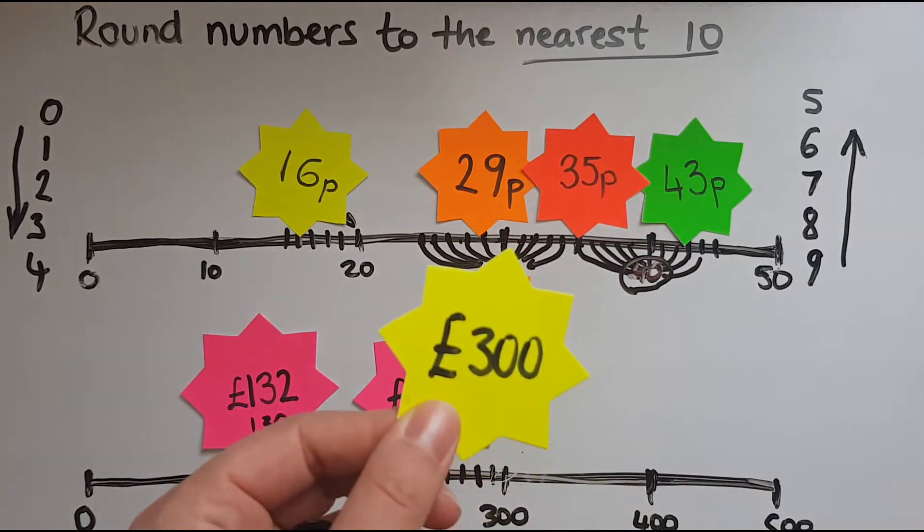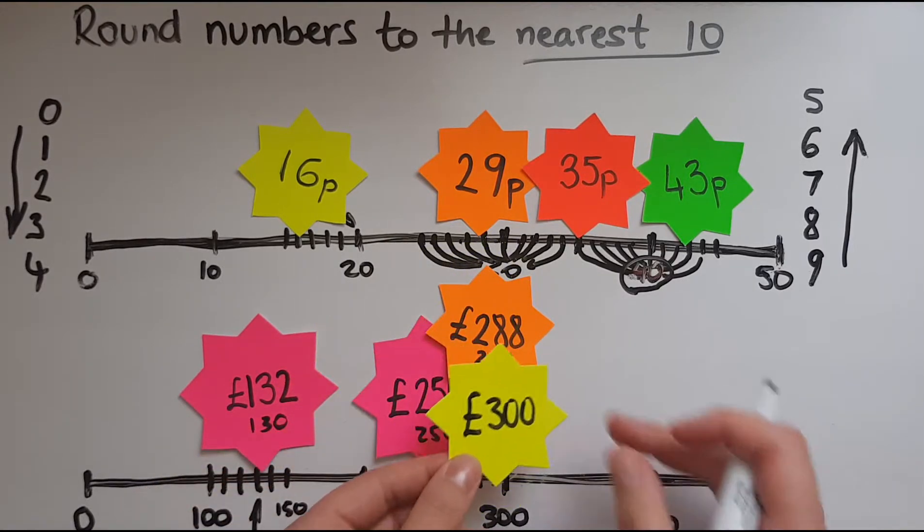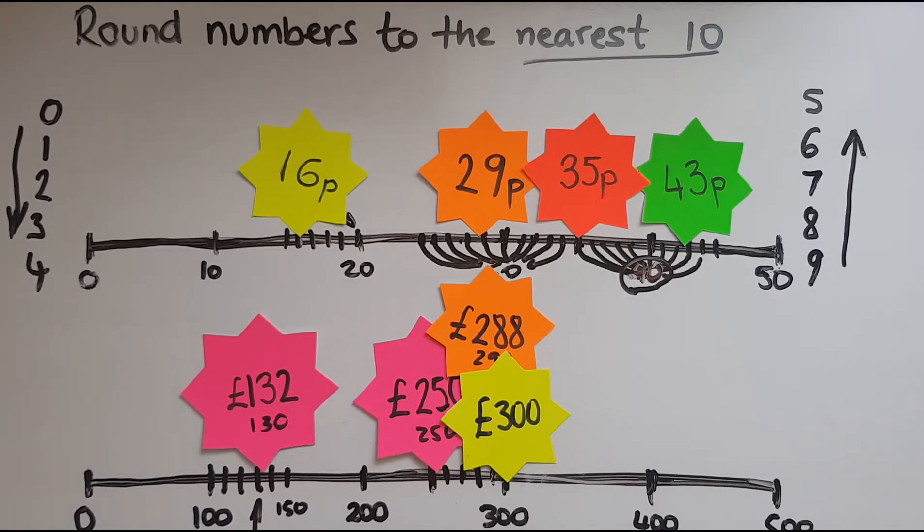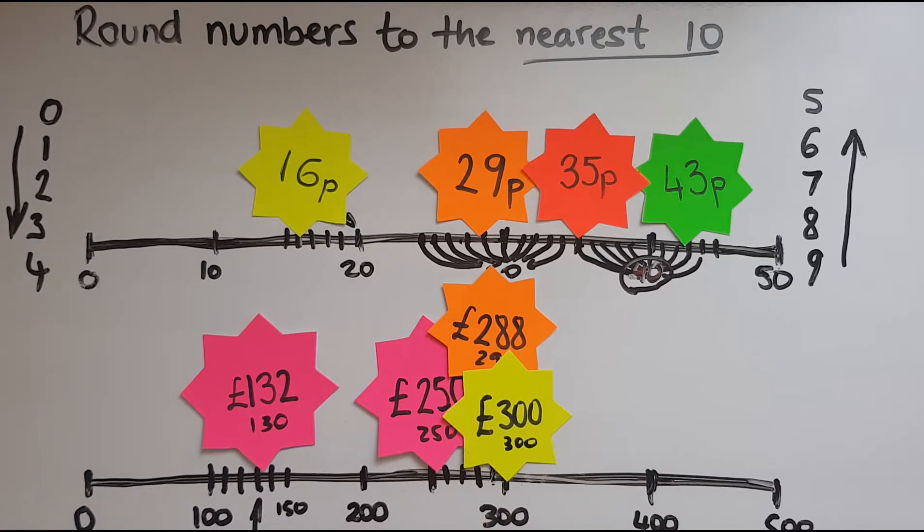Now 300 I have. Where does that stand? And that's again spot on 300 here. And that would be between 300 and 310 because we're looking at the tens. But since it's spot on 300, that's already rounded. So it's 300 to the nearest 10.